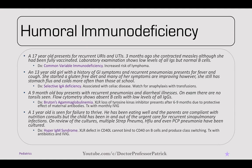A nine-month-old boy presents for recurrent pneumonias and diarrheal illnesses. On exam, there are no tonsils visible, and flow cytometry shows absent B cells with low levels of all IgGs. This is Bruton's agammaglobulinemia — an X-linked recessive loss of tyrosine kinase that presents at six to nine months due to the protection of maternal antibodies. Treatment is monthly IVIG.